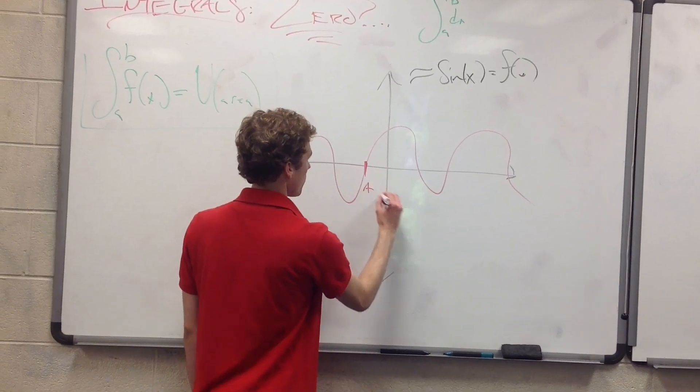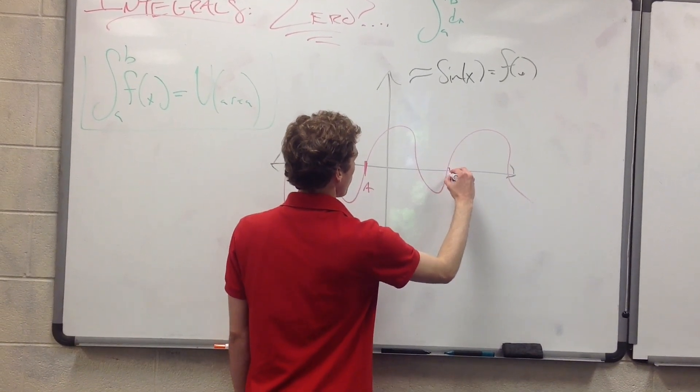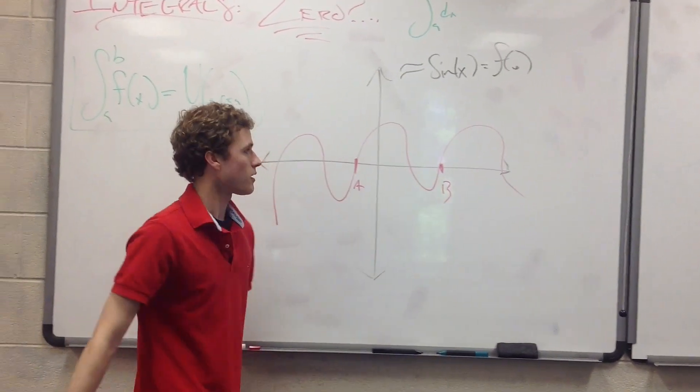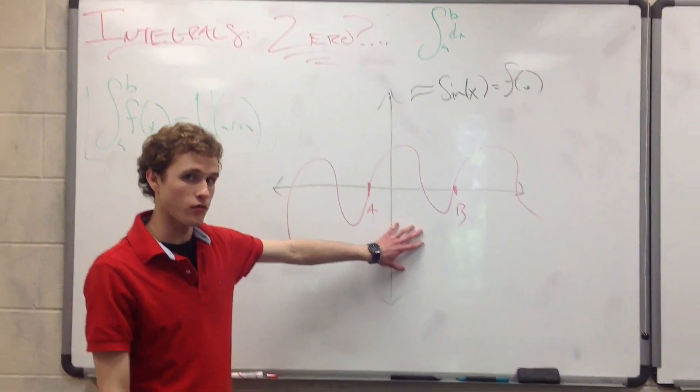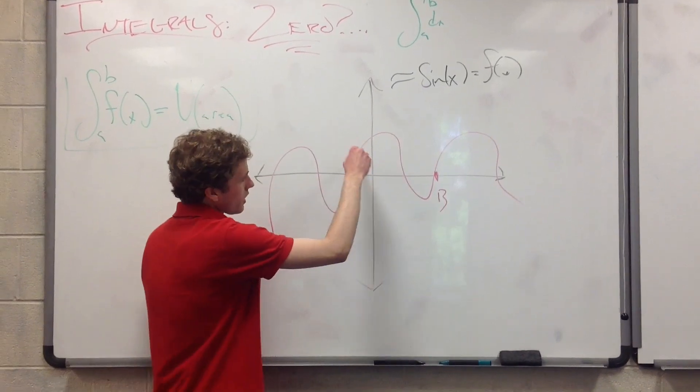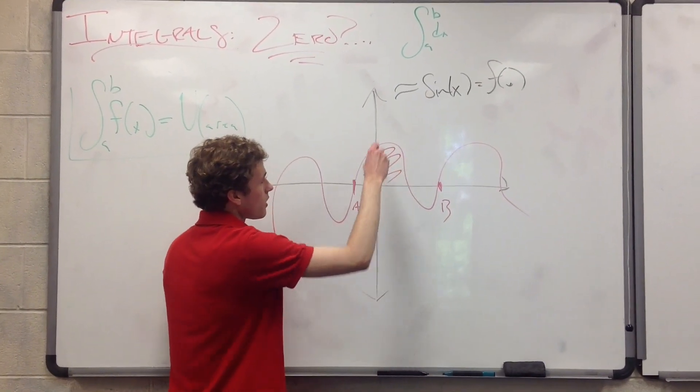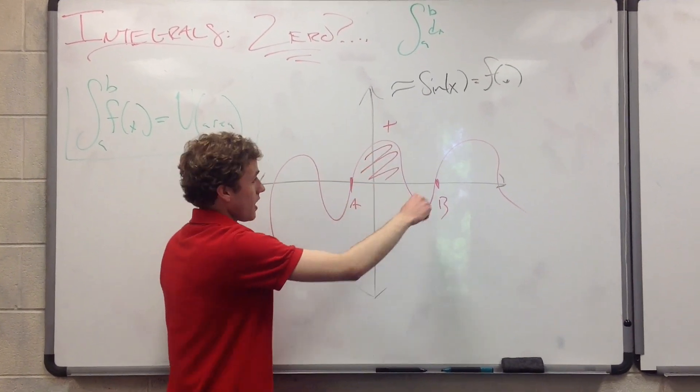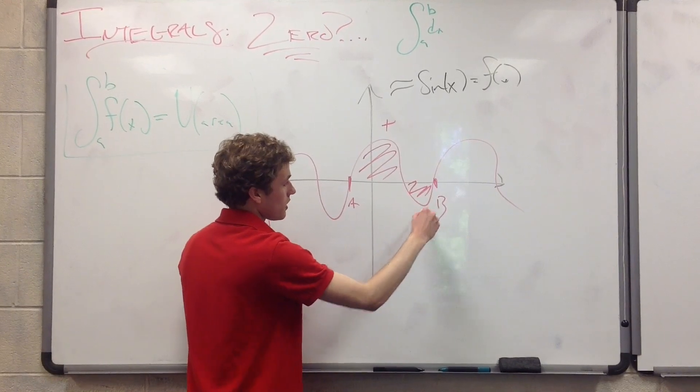And here is point A, right here, and here is point B, and this is so not to scale, it's not even funny, but let's just understand what I'm talking about for the purposes of this. The area in between here is positive. The area in between here is negative.